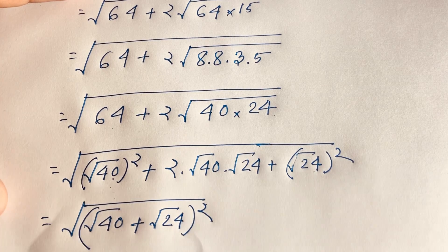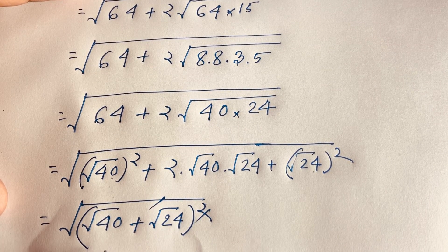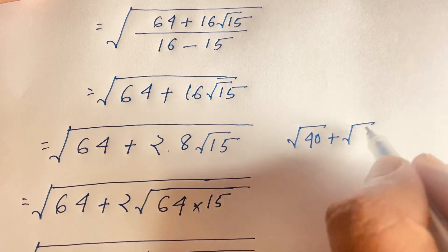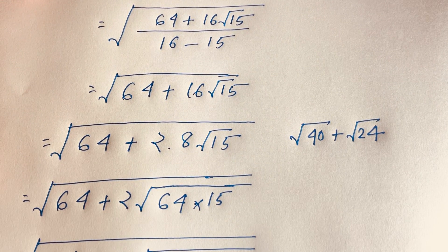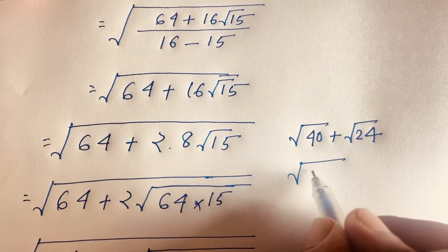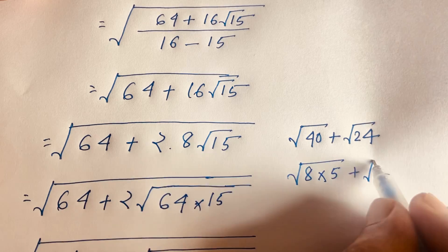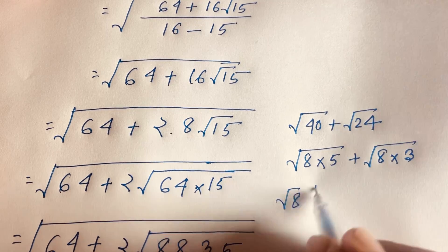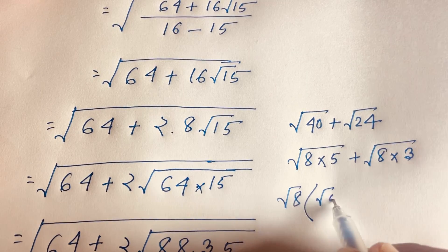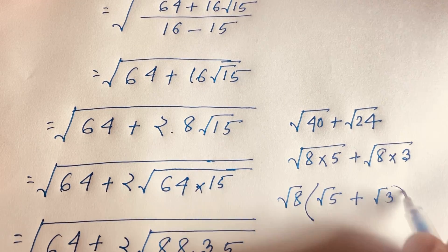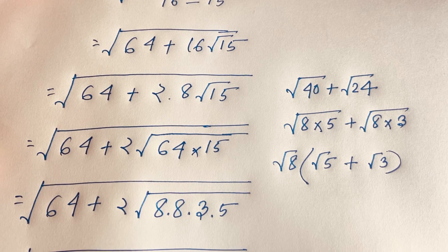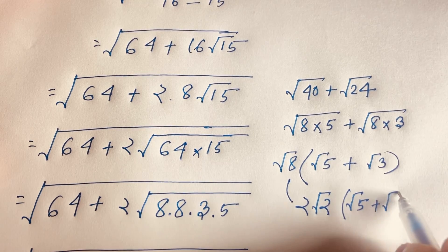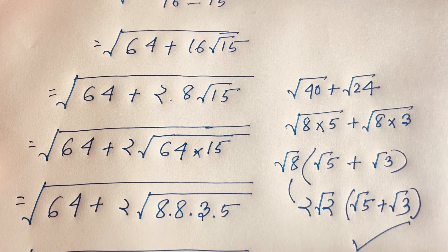So square root 40 plus square root 24: square root 40 equals square root of 8 times 5, and square root 24 equals square root of 8 times 3. Taking square root 8 as common gives square root 8 times (square root 5 plus square root 3), which is 2 square root 2 times (square root 5 plus square root 3). This is our final answer.